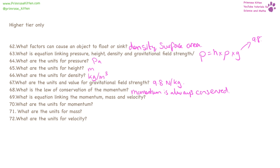The law of conservation of momentum states that momentum must be conserved — your momentum before must equal your momentum afterwards. The equation linking momentum, mass, and velocity is: momentum equals mass times velocity. The units for momentum are kilogram metres per second — note it is kilograms then a clear space before metres per second, not kilograms per metres per second. The units for mass are kilograms and the units for velocity are metres per second.